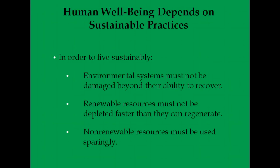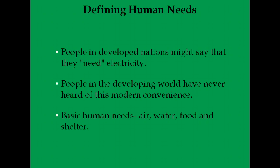To live sustainably, we need to use non-renewable resources like coal, oil, and natural gas carefully and sparingly. Renewable resources — such as solar, wind, hydro, and hydrogen — must not be depleted faster than they can regenerate. Environmental systems must not be damaged beyond their ability to recover. Humans keep degrading ecosystems and habitats, sometimes to the point where species and even ecosystems can't recover — especially cutting down rainforests or using agricultural practices that destroy the soil so crops can't come back.